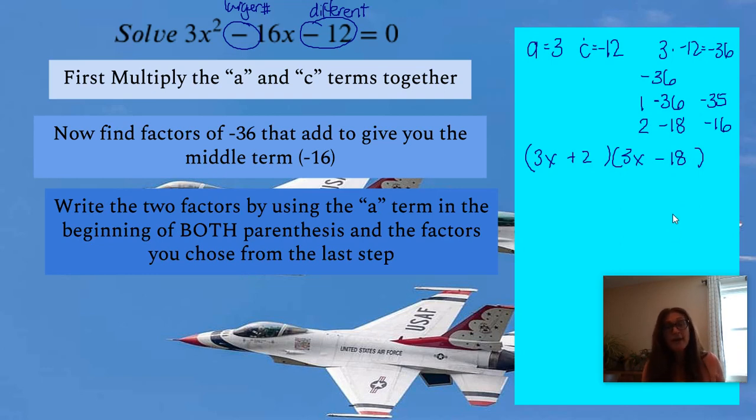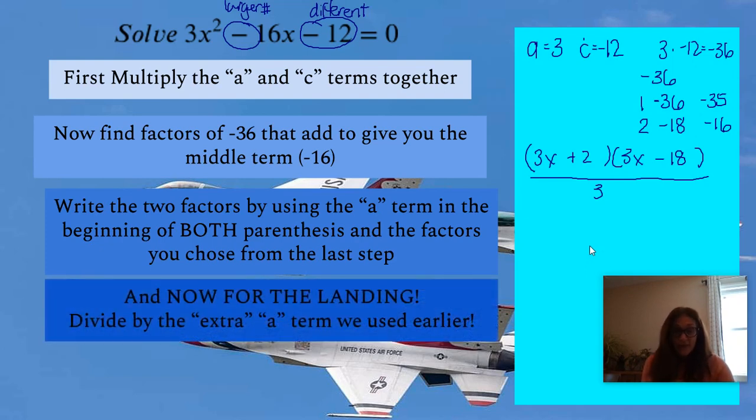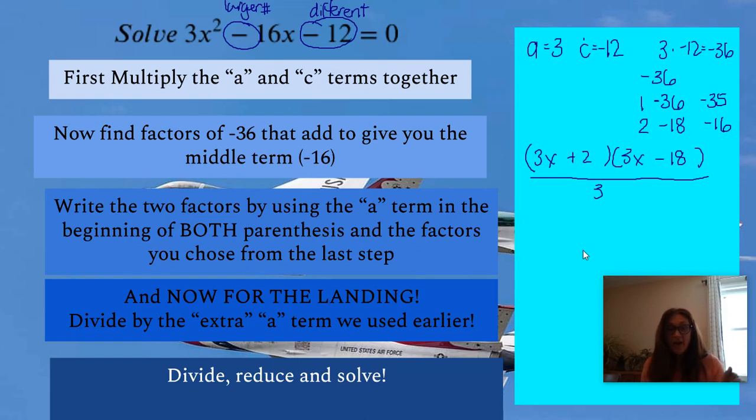Now, this is why it's called the airplane method, because what we're going to do is we are going to land the plane. We're landing the plane right now. We know that one of these 3s is wrong, so we're going to divide by 3 to get rid of it. So that's the landing part. Then what we're going to do is divide, and we're going to reduce, and then we're going to solve it.